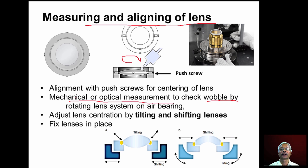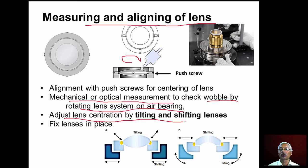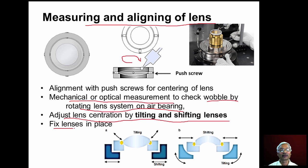A dial indicator is a simple mechanical measuring unit; we can also use a feeler gauge. The rotating lens system is normally mounted on an air bearing so that out-of-plane movement is reduced. We slowly rotate the lens system and measure the wobble. If wobble exists, we must adjust lens centration by tilting or shifting the lens, or shifting the barrel.